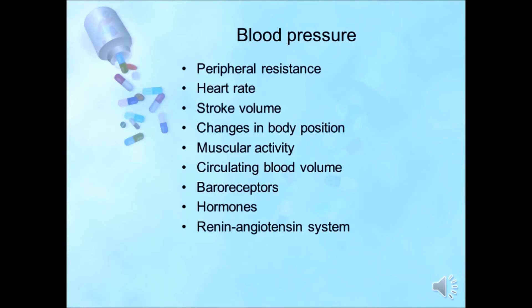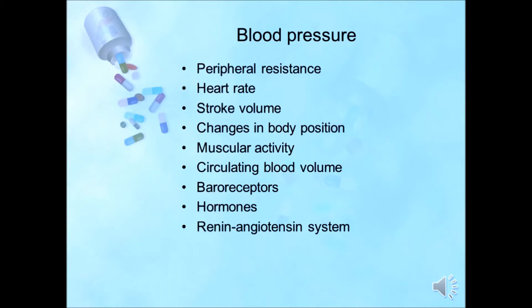Blood pressure must be kept at a level that is adequate to maintain tissue perfusion as the blood moves into the capillaries. Peripheral resistance, heart rate, and stroke volume interact to determine the mean arterial pressure and capillary flow. Peripheral resistance is determined by the diameter of the arterioles; constriction of the arterioles will raise the blood pressure. Other factors that influence blood pressure include changes in body position, muscular activity — which causes local warmth and thus dilating the vessels — and circulating blood volume. Baroreceptors respond to local changes in blood pressure by constricting or relaxing smooth muscle to change blood flow. Many hormones also cause contraction or relaxation of arterial smooth muscles to bring blood flow to a specific organ.